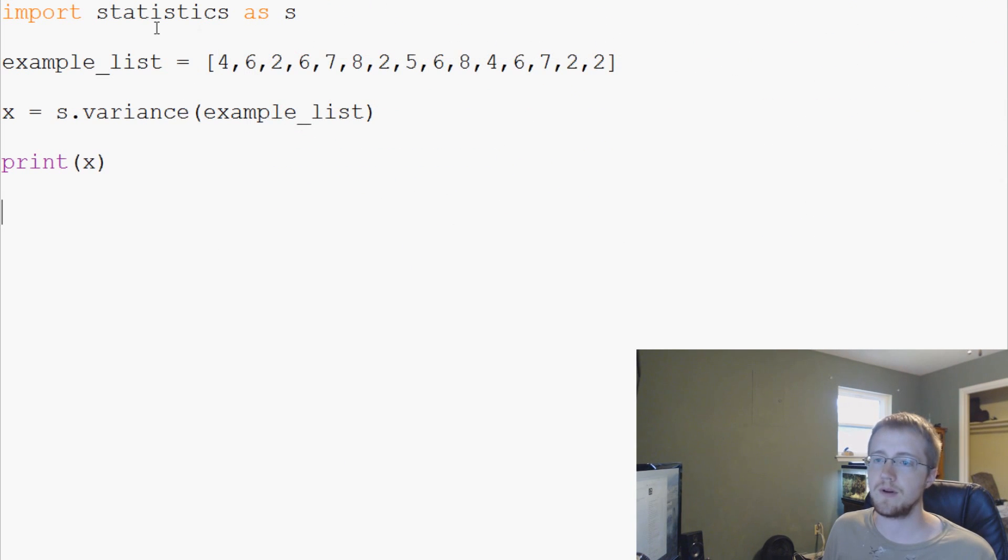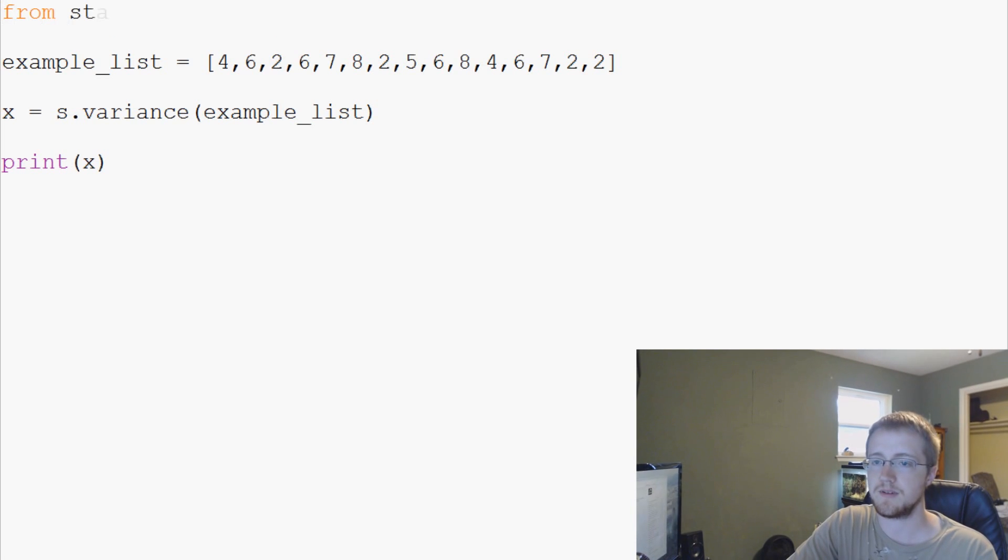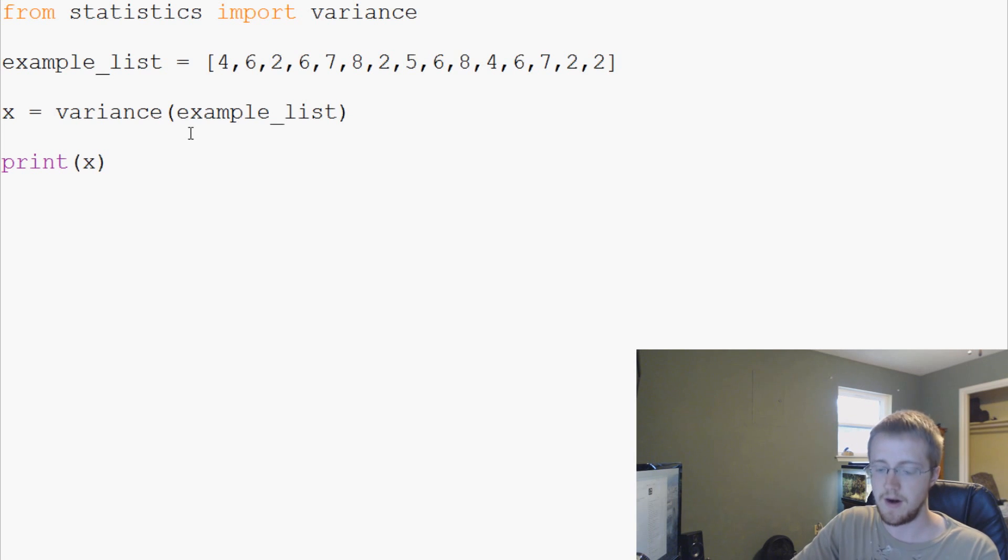And now you get your variance of 4.85. So we're able to reference it just with a simple s. Now the other thing that you can do as well is say you don't even want to type s, you just want to say variance. Well, you can do that as well, and that's going to be from statistics. This is why we want to do it as s, it's a pain to type. So from statistics import variance.